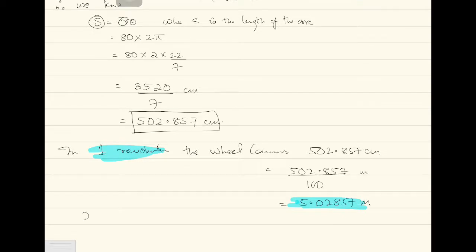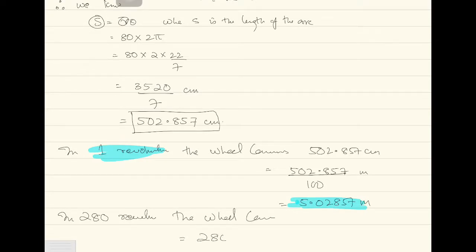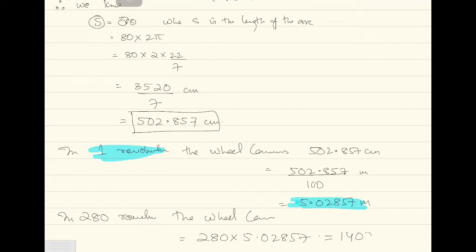In one minute it makes 280 revolutions, so in 280 revolutions the wheel covers 280 into 5.02857. Using the calculator: 5.02857 multiplied by 280 gives 1407.9996 meters. So this much distance is covered by the wheel in 280 revolutions — which happen in one minute.